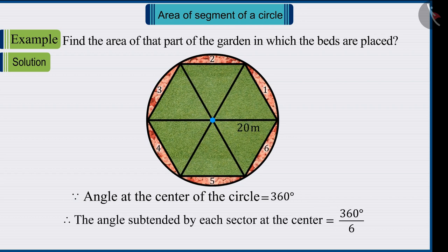So, we can say that the angle subtended at the centre by each sector will be 60 degrees, which is represented as follows.